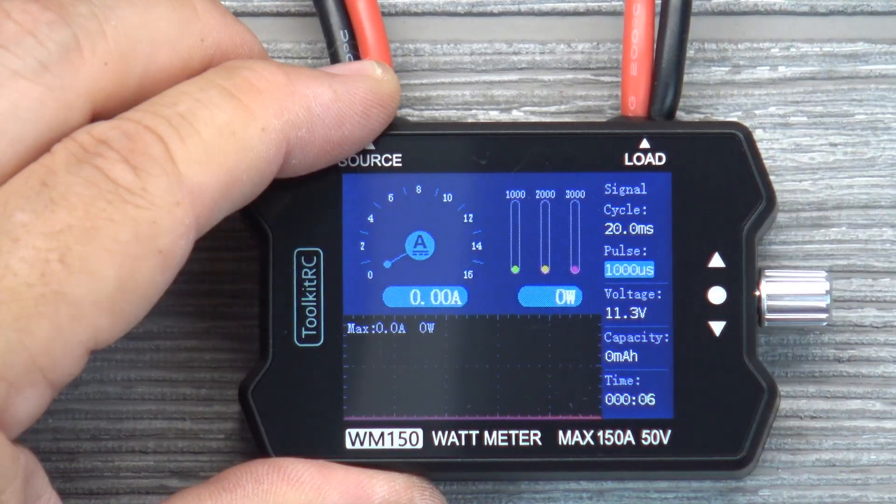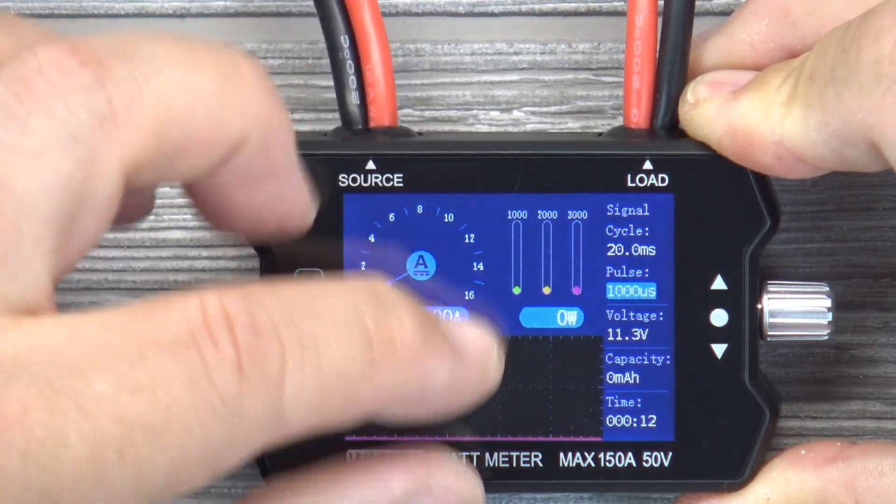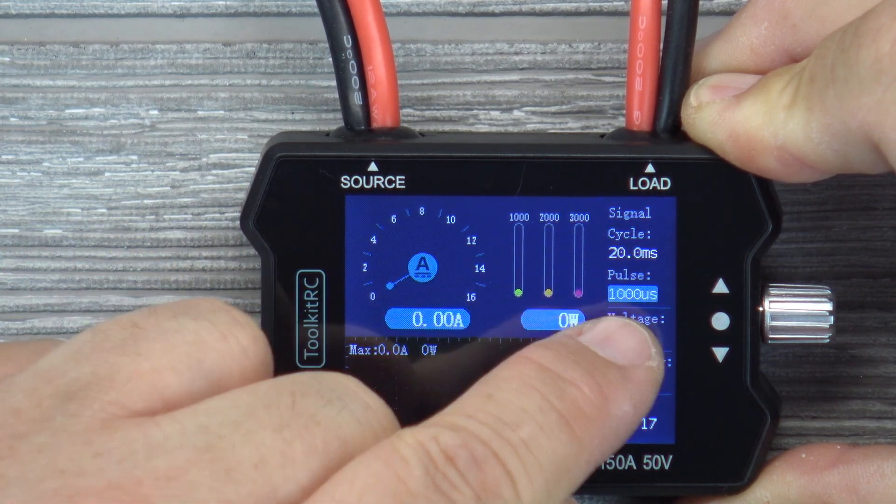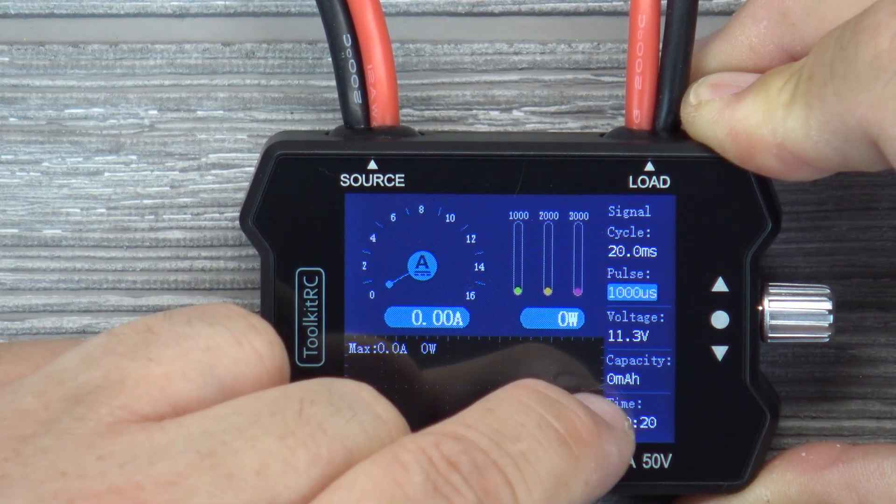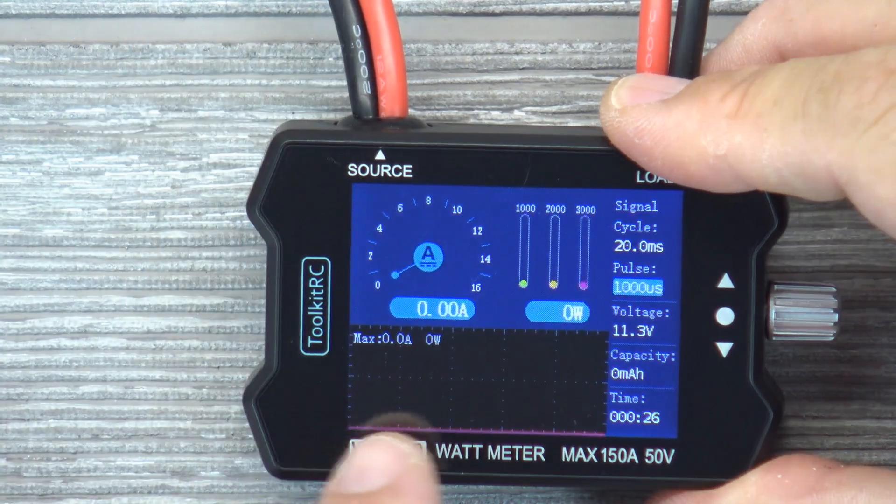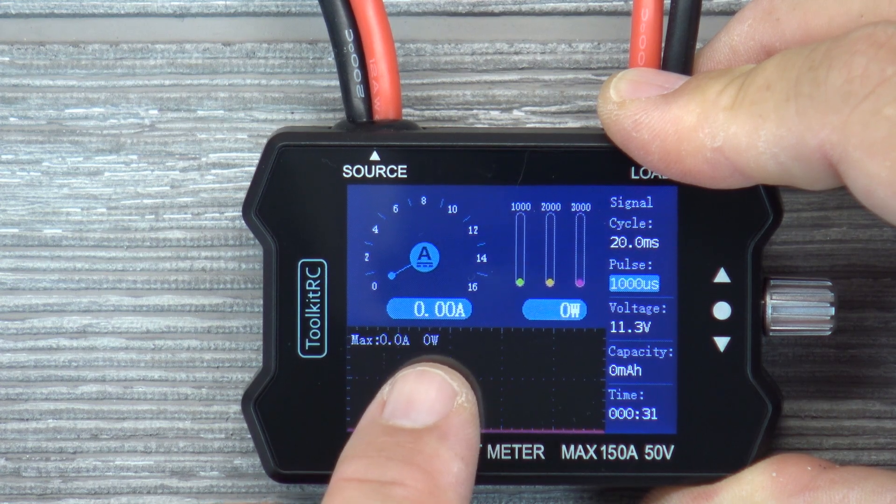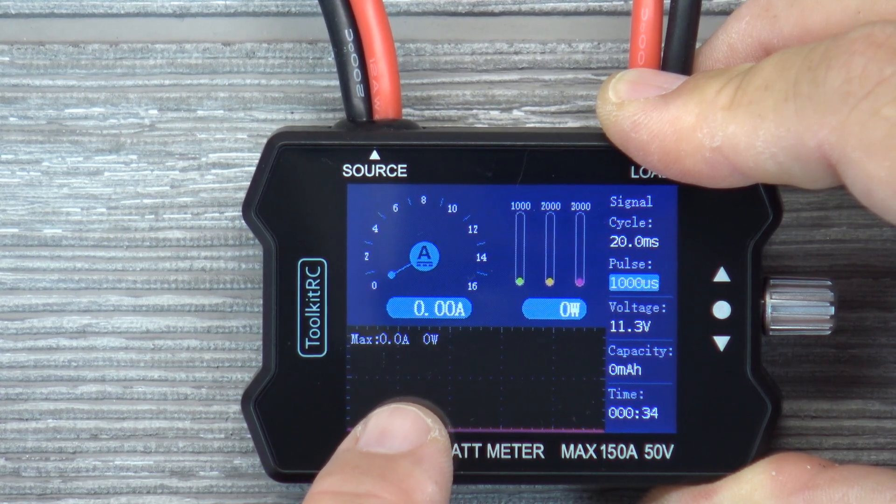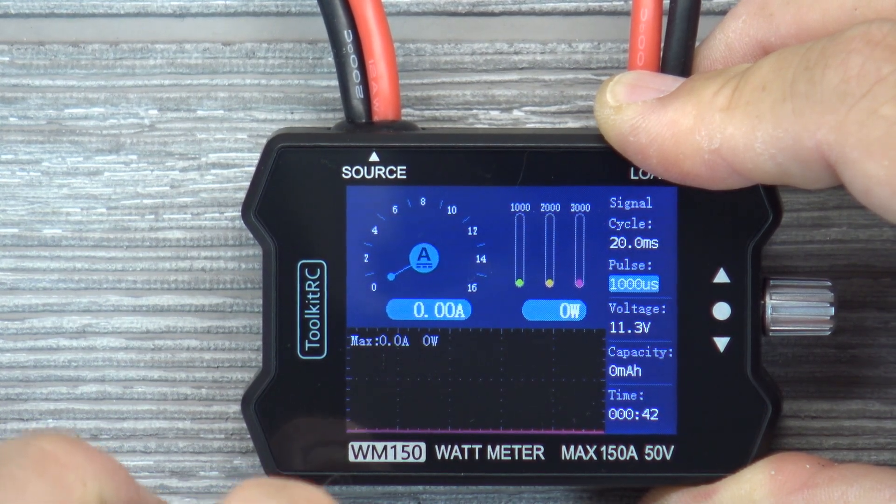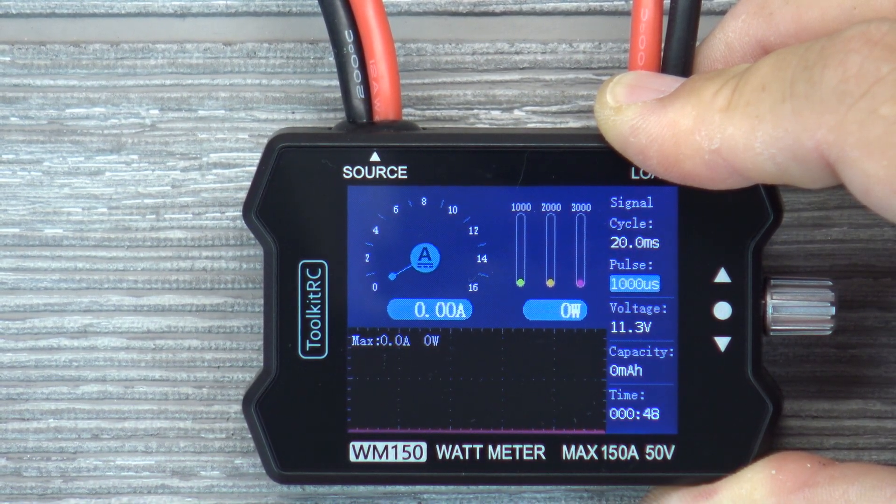And then you've got your Amp Meter. 1000, 2000, 3000, not exactly sure what that is. There's a signal cycle on the side with the pulse width, the voltage of the input battery, the capacity. I think that means the amp hours used, the time used. And I know that on the early copies of this device, they didn't keep the max amperage and wattage after a run. So after some complaints out there, they went ahead and did a firmware update that stores the max amperage and wattage after a run. And it just occurred to me that these three meters are for the watts.